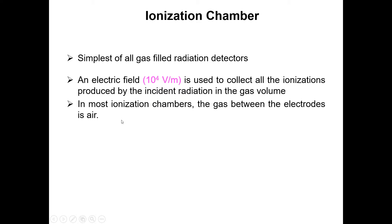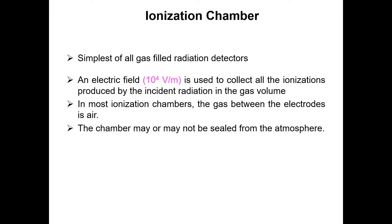In most ionization chambers, the gas between the electrodes is air. We can use noble gases as well — such as argon or helium — just as mentioned for gas-filled detectors in the general introduction. But we can also use air.